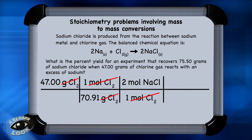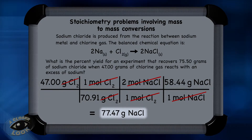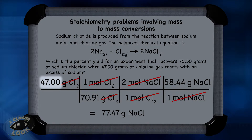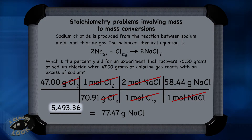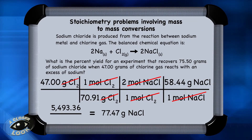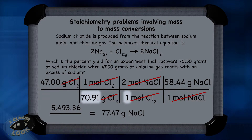You're not done yet because you need grams of sodium chloride. In this last step, convert from moles of sodium chloride to grams of sodium chloride using the molar mass, 58.44 grams, and cancel the units of moles of sodium chloride. To get there, take 47.00 × 1 × 2 × 58.44, which equals 5,493.36, then divide by 70.91 × 1 × 1, which is just 70.91, and you get 77.47 grams after rounding to 4 significant figures.